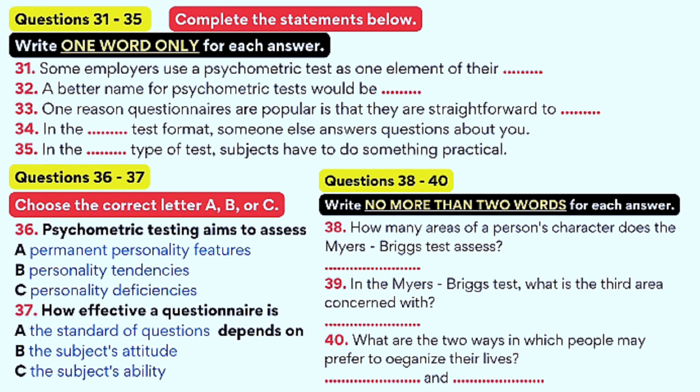One of the most well-respected psychometric tests is the Myers-Briggs test, which asks subjects about their preferences in four main areas. Firstly, the test asks people where they direct their energy, to the outer world of activity or the inner world of thoughts and emotions. Secondly, people are asked how they prefer to process information, in the form of known facts or in the form of possibilities. The third area is decision-making, do people make decisions on the basis of logic or of personal values. Lastly, Myers-Briggs tests ask people how they prefer to organize their lives, in a structured or a flexible way.